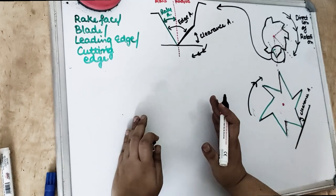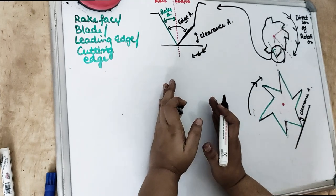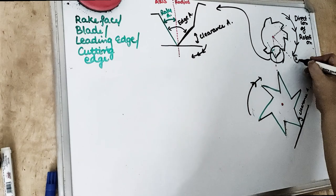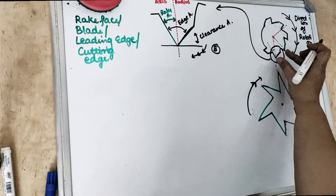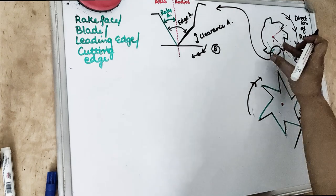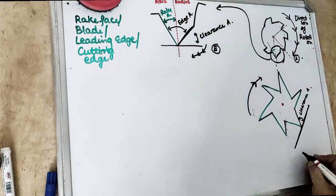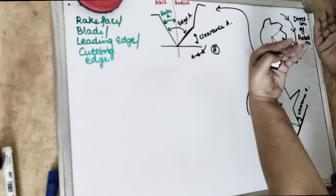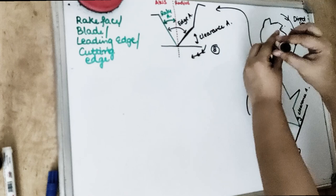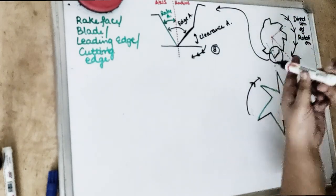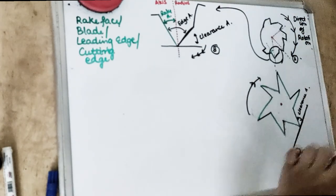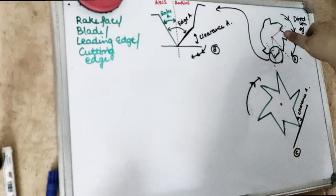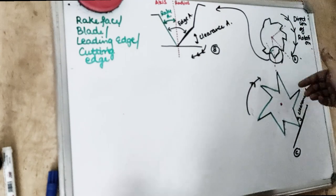The rake angle is an angle formed in the cross section. Diagram A is the cross section, diagram B is the enlarged version of just a part of this cross section, and C is also a cross section. When we cut the file in cross section and zoom in on the half, it looks like this. The direction of rotation of the file is always clockwise.